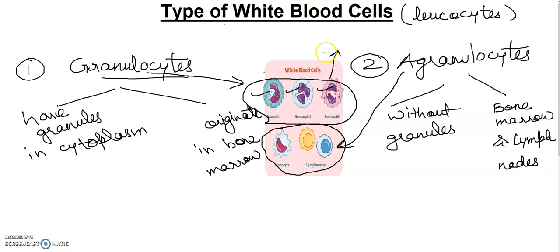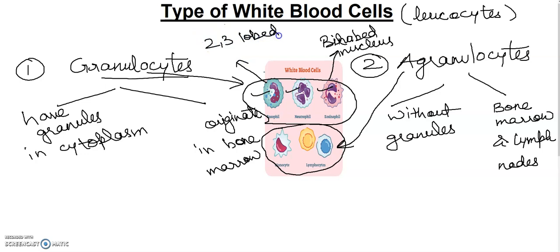Eosinophils have a lobed nucleus — you can see in the figure, two lobes. Basophils have a two to three lobe shaped nucleus. Neutrophils have a multi-lobed nucleus, as you can see in this figure.